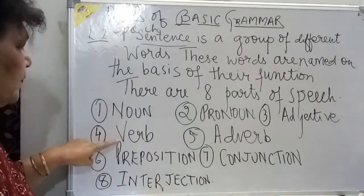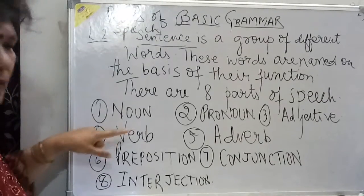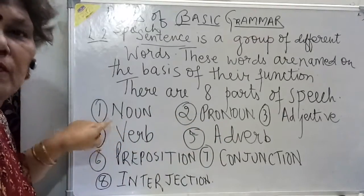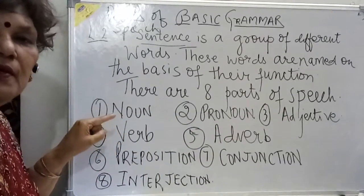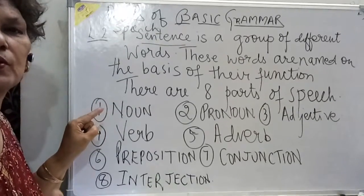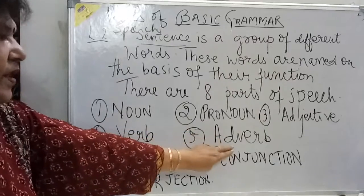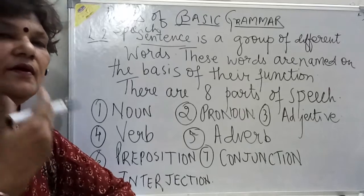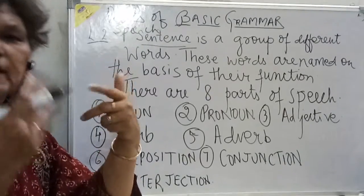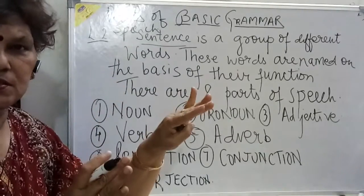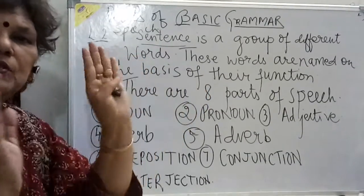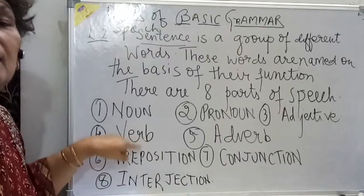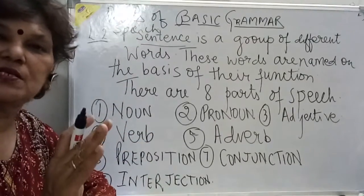Number four is verb. The verb means an action word. For example, in the sentence 'she walks,' the word 'walks' is a verb — it is the part of speech. If I say 'she walks slowly,' then 'slowly' describes how she walks.